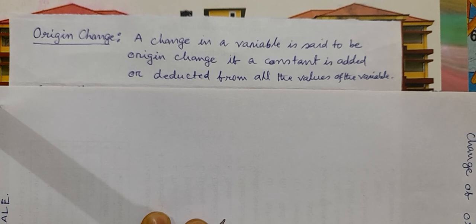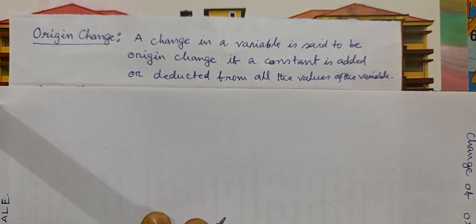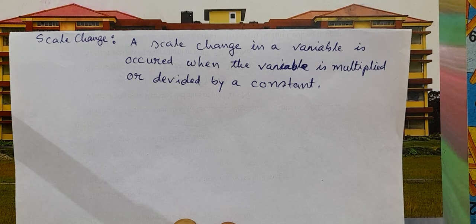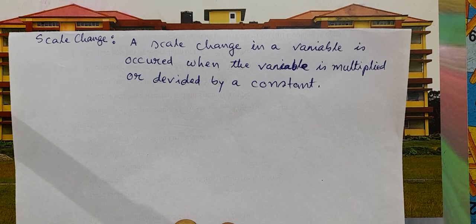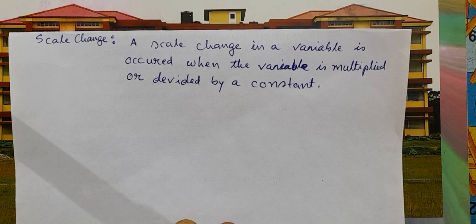A change in a variable is said to be an origin change if a constant is added or deducted from all the values of the variable. On the other hand, a scale change in a variable occurs when the variable is multiplied or divided by a constant.